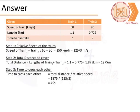We now move to solving the problem. The data given to us is the speeds of the trains 60 and 90 km per hour, the lengths of the two trains 1.1 km and 0.775 km.